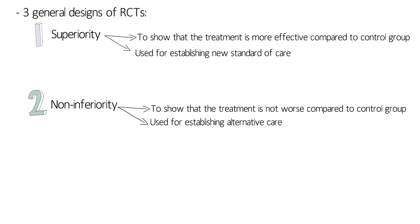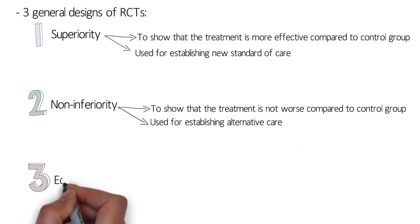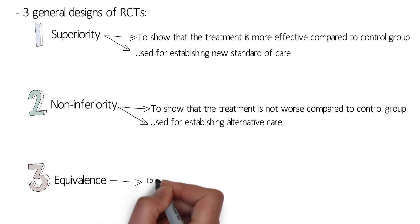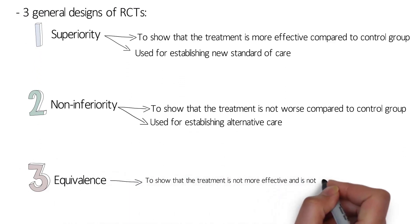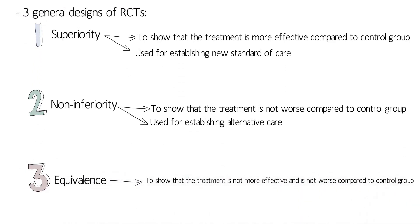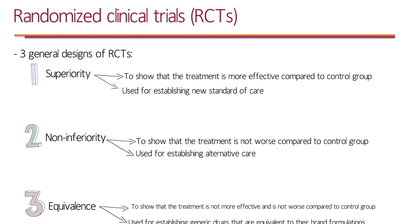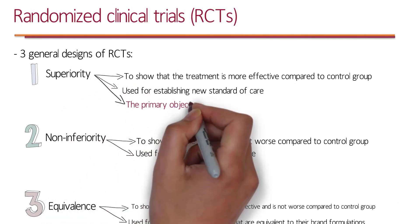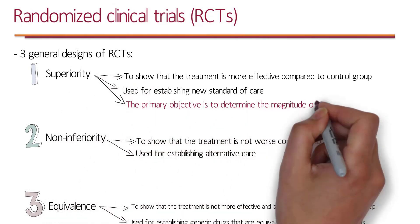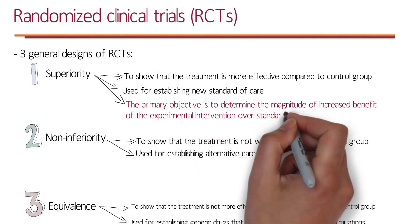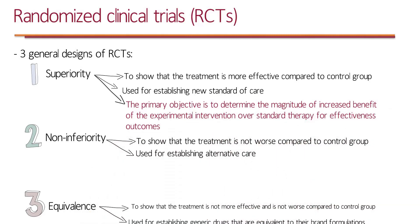And the last design is equivalence, which is used to show the treatment is not more effective and is not worse compared to the control group. This design is used for establishing generic drugs that are equivalent to their brand formulation. For superiority studies, the primary objective is to determine the magnitude of increased benefit of the experimental intervention over standard therapy for effectiveness outcomes.